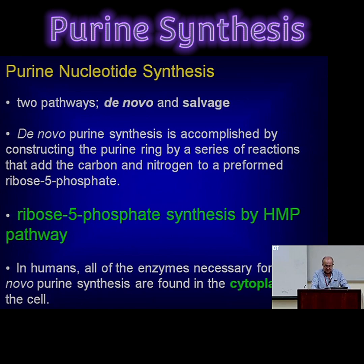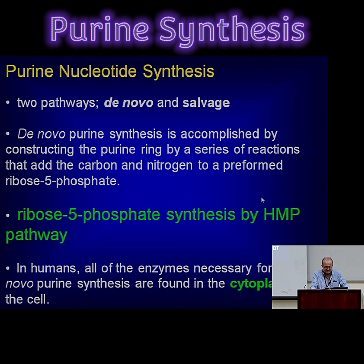We're going to cover some drugs that affect purine and pyrimidine synthesis. First of all, I want you to appreciate that the ribose needed for nucleotide biosynthesis — purine nucleotide — comes from the HMP pathway. One of the products of the HMP pathway is ribose 5-phosphate. Very important.